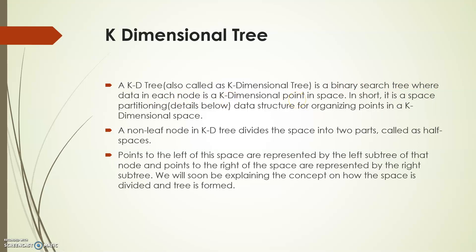The non-leaf node of a KD-tree divides the space into two parts. If it is not a leaf node, the point or data being inserted into the tree is going to divide the space into a left half-space and a right half-space. Points to the left of the space are represented by the left subtree of that node, and points to the right are represented by the right subtree.